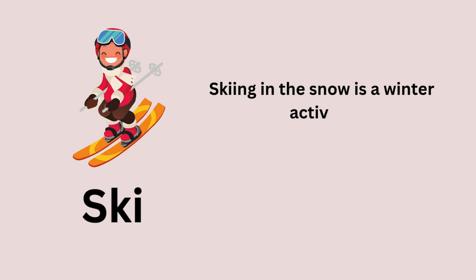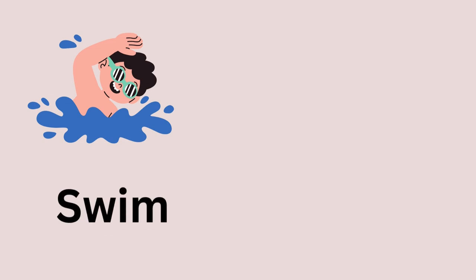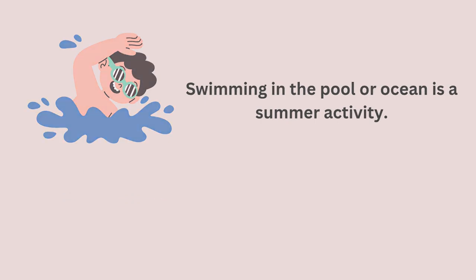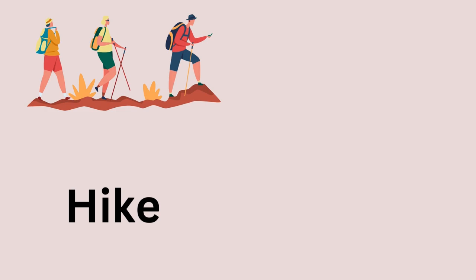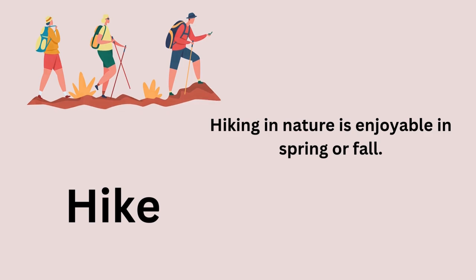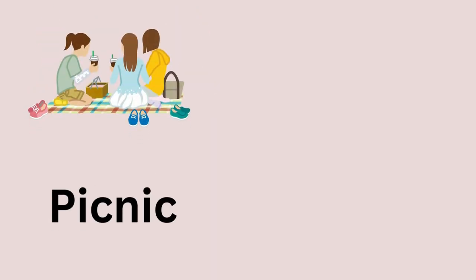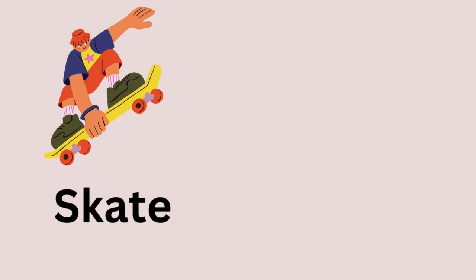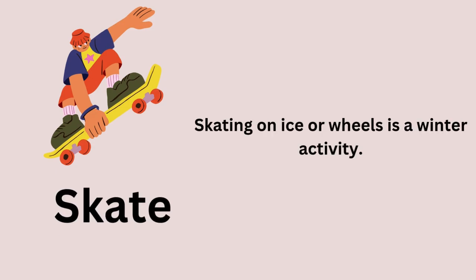Seasonal Actions. Ski — skiing in the snow is a winter activity. Swim — swimming in the pool or ocean is a summer activity. Hike — hiking in nature is enjoyable in spring or fall. Picnic — having a picnic is a summer tradition. Skate — skating on ice or wheels is a winter activity.